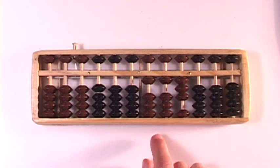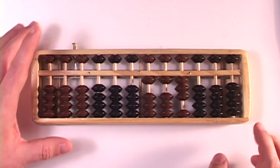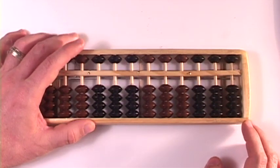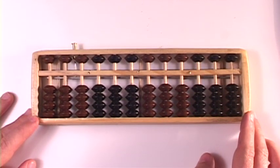85 plus 28 is a 1, a 1, and a 3, that's going to be 113. 85 plus 28 is 113. Alright, wasn't too bad. Let's do another. You're telling me, alright, you really want to do this. Let's do another.